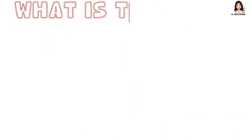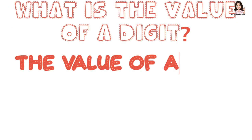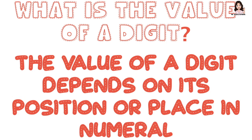Even though the digits on each place value are the same, their values are different because every digit has its own value. What is the value of a digit? The value of a digit depends on its position or place in a numeral. So let's have more examples.